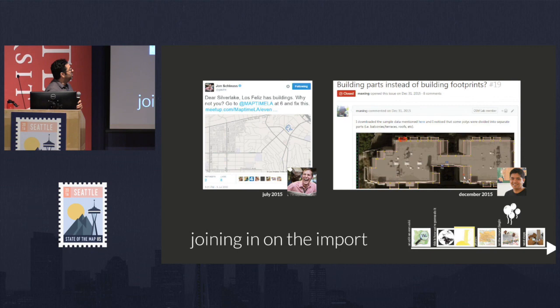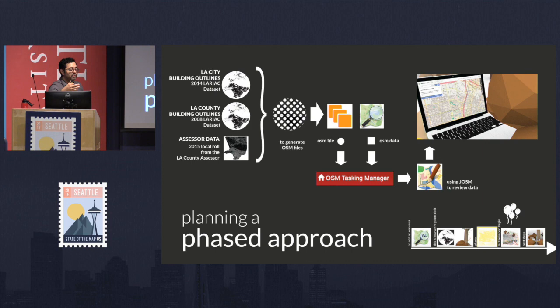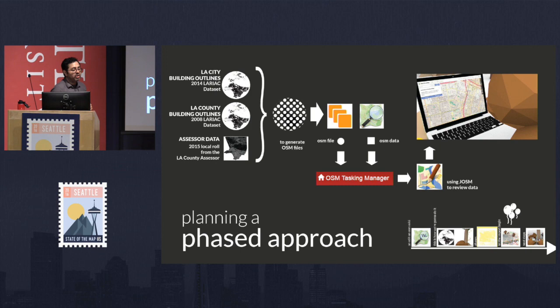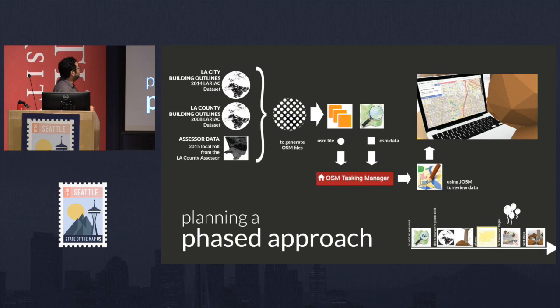With these two getting together, they really helped push it further. After things were slowing down, they picked up speed in scripting and programming. We ended up building using three datasets: LA City, LA County — because there's a 2014 updated dataset for the buildings — the 2000 NAIP dataset, and the 2015 local roll of the assessor. We'd generate OSM files served through a server handled by a tasking manager, going to JOSM where contributors would check out and upload. A quick note: we didn't add the addresses.